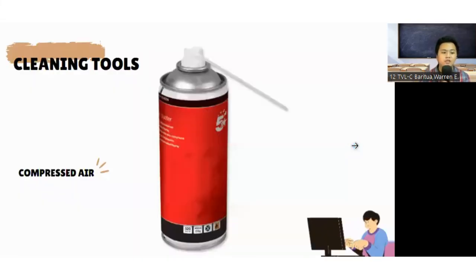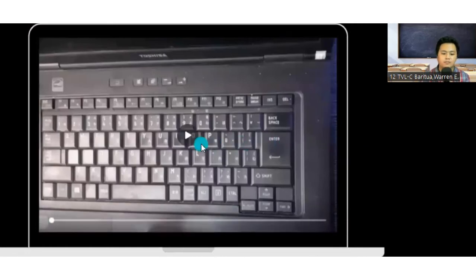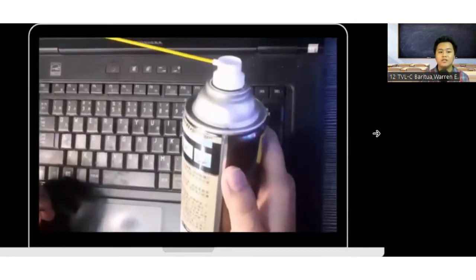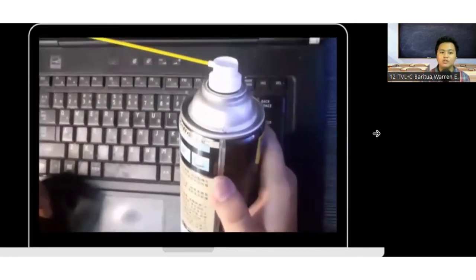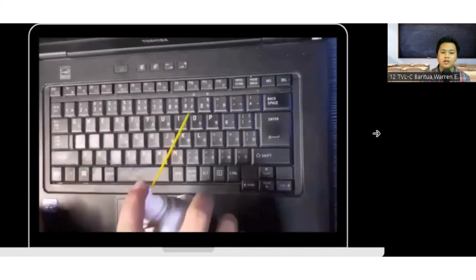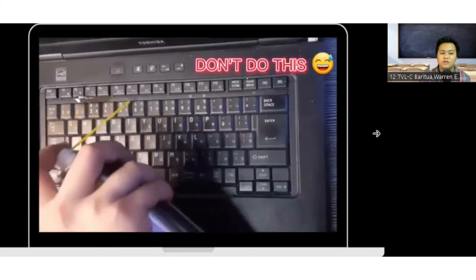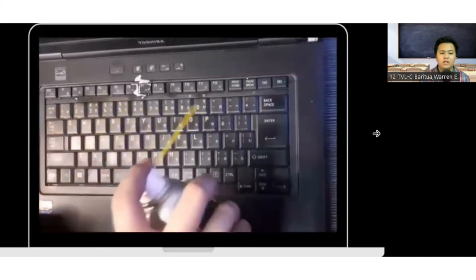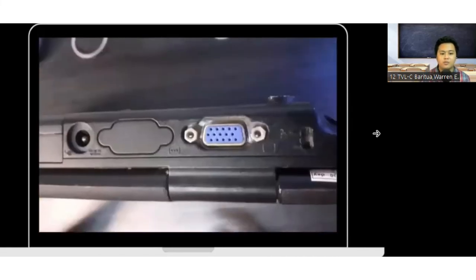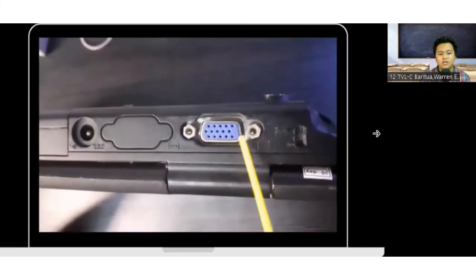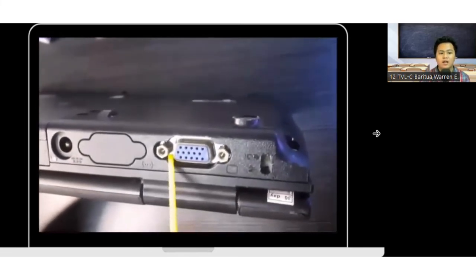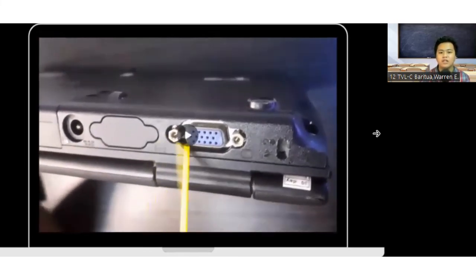Next is compressed air which is a combination of under-pressure gases that remove dust and dirt from sensitive electronics. Just a reminder, in using compressed air, don't tilt the can and don't shake it before or while using it just like what I did in the part of this video. With computers and electronics, compressed air is the preferred method for removing dust and dirt. Use it in an upright position and spray short even bursts.